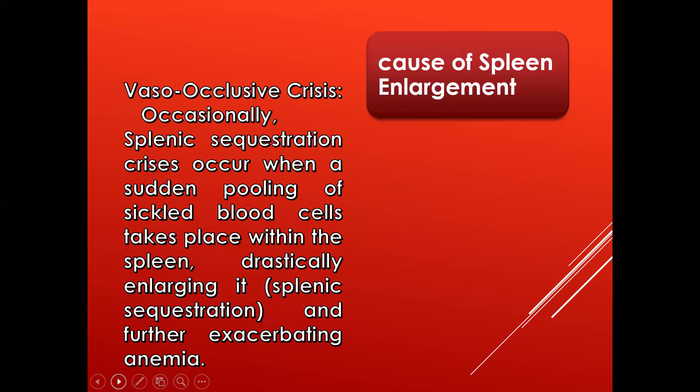Another cause of spleen enlargement in the sickle cell patient is vaso-occlusive crisis. As the spleen tries to remove those sickle cells, it leads to a crisis, and at a certain point there will be pooling of sickle blood cells within the spleen, making the spleen very much larger.